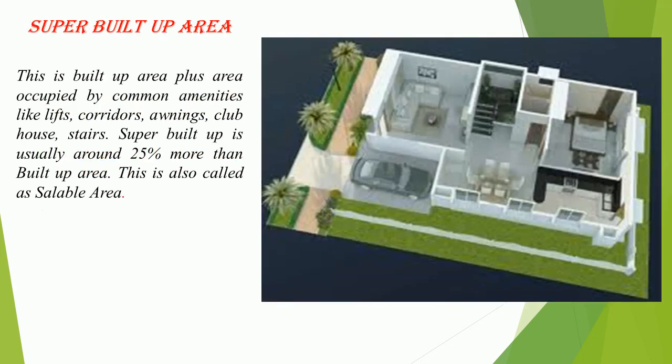Super built-up area is the built-up area plus the area occupied by common amenities like lifts, corridors, awnings, clubhouse, and stairs. Super built-up area is usually around 25% more than the built-up area. This is also called the saleable area.